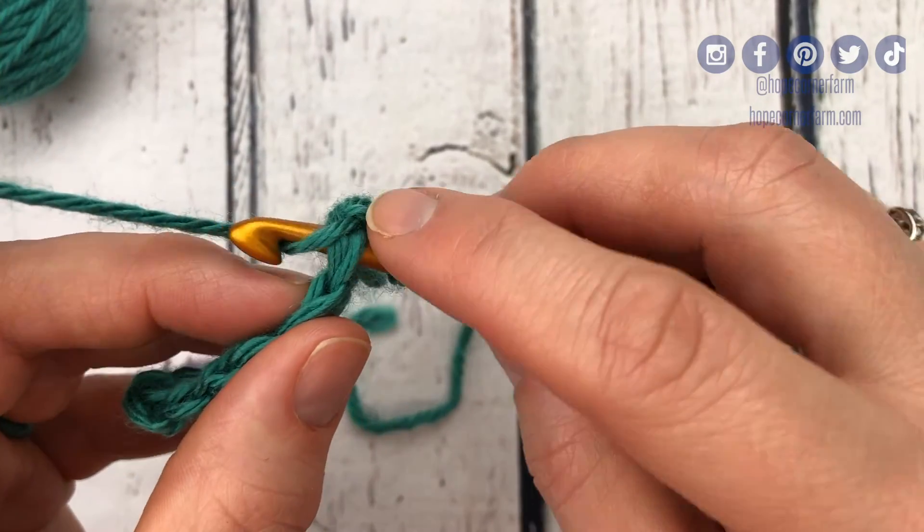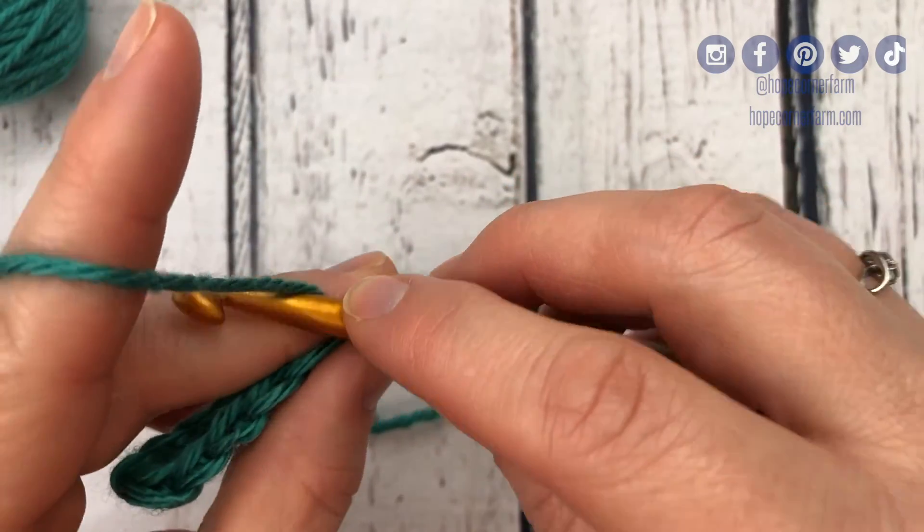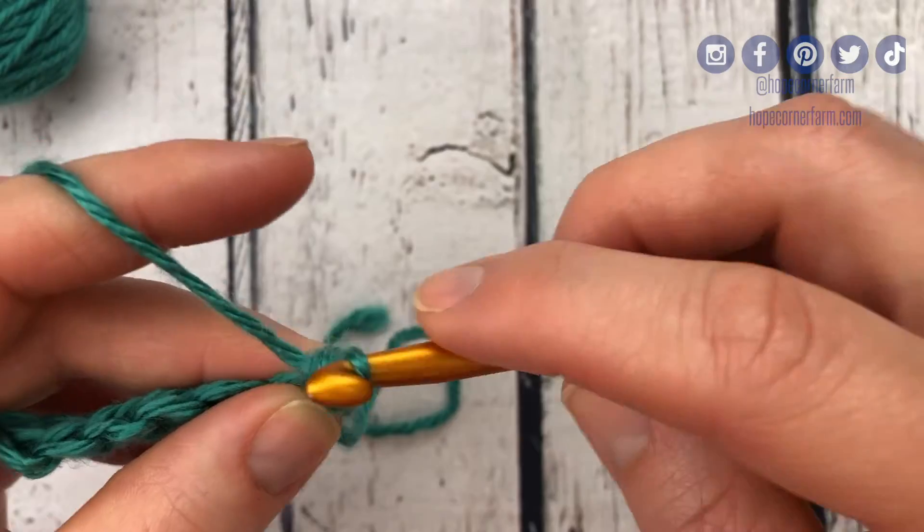Make sure you have the two legs of the previous single crochet on top. Same thing, we're gonna come up, horizontal yarn over and pull through. Now the second one we're gonna do our rotating yarn over and pull through.